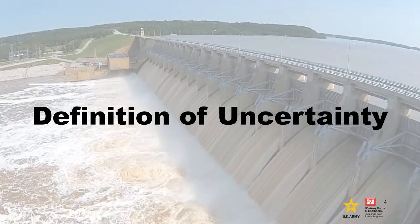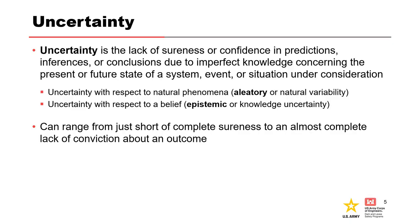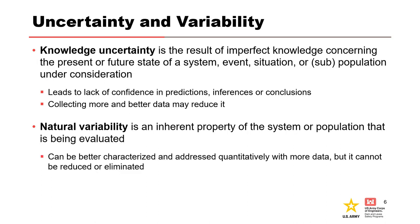Starting with the definition of uncertainty. Uncertainty is a lack of sureness or confidence in predictions, inferences, or conclusions due to imperfect knowledge. When dealing with uncertainty with respect to natural phenomena, that is known as aleatory uncertainty or natural variability. Uncertainty with respect to a belief is known as epistemic or knowledge uncertainty. Knowledge uncertainty is the result of imperfect knowledge, and collecting more and better data might reduce it. Examples include model uncertainty and parameter uncertainty.